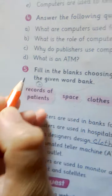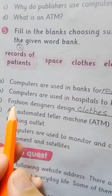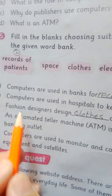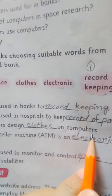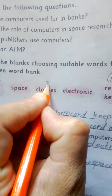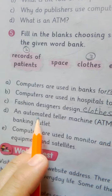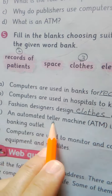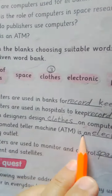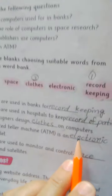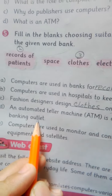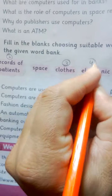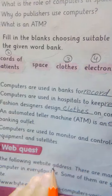Number 3: Fashion designers design clothes on computers. Number 4: An Automated Teller Machine, ATM, is an Electronic Banking Outlet. This is the answer of number 4 blank.